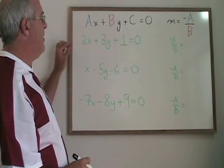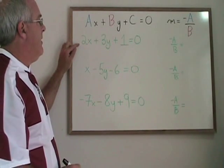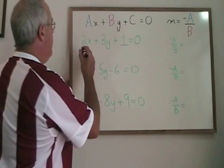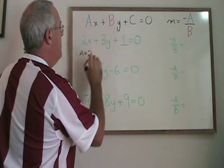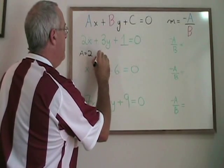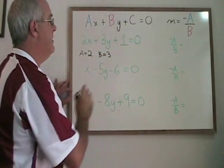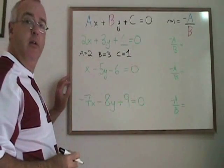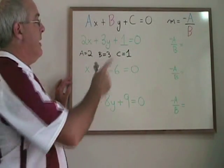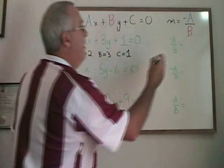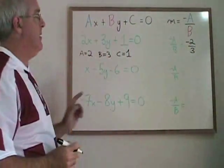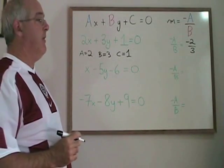In the first equation, it's already in the form ax plus by plus c equals 0, and we can see that our a is equal to 2 in this case. Our b is equal to 3, and our c is equal to 1. The c is not used in the formula, so negative a over b becomes negative 2 over 3, which means that the slope of this straight line is negative two-thirds.